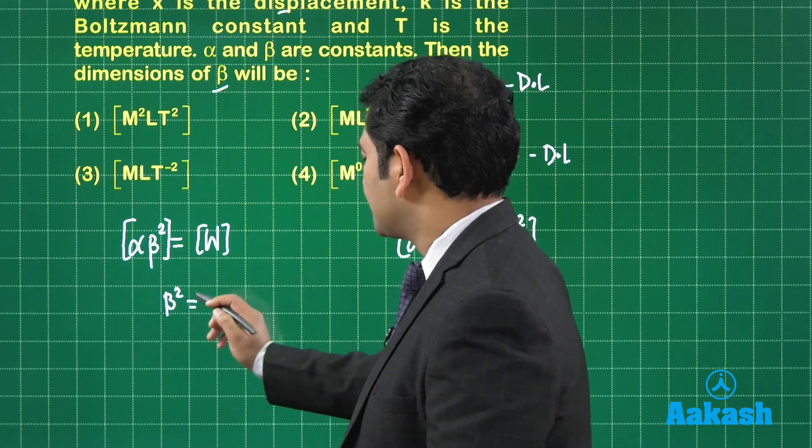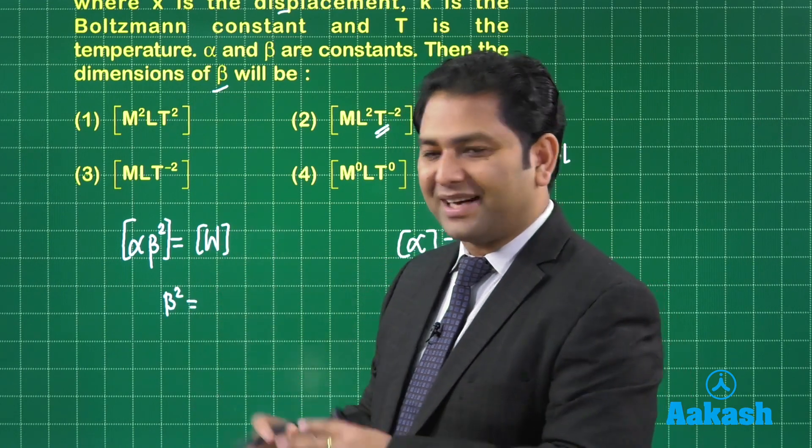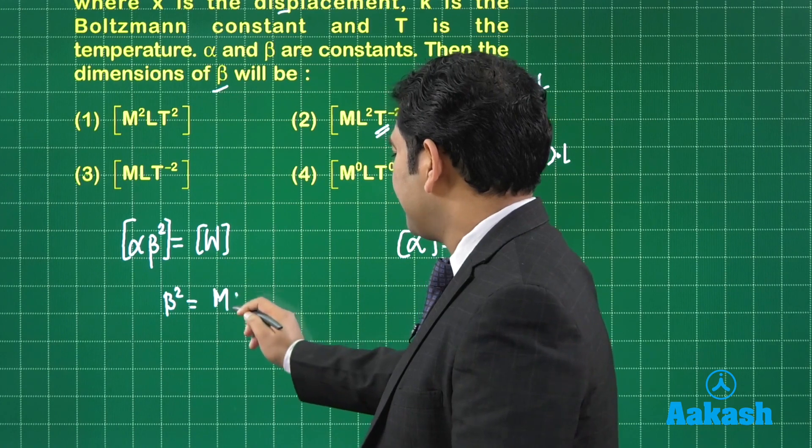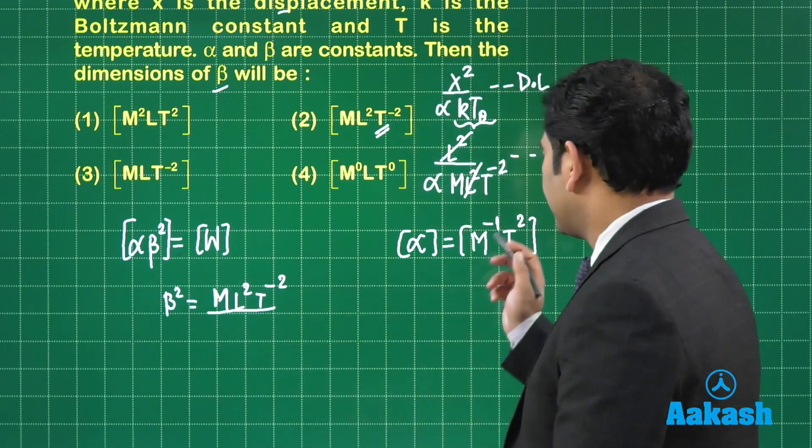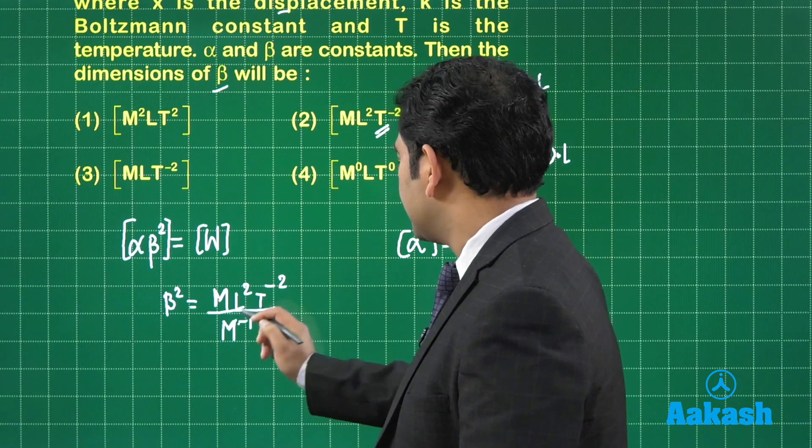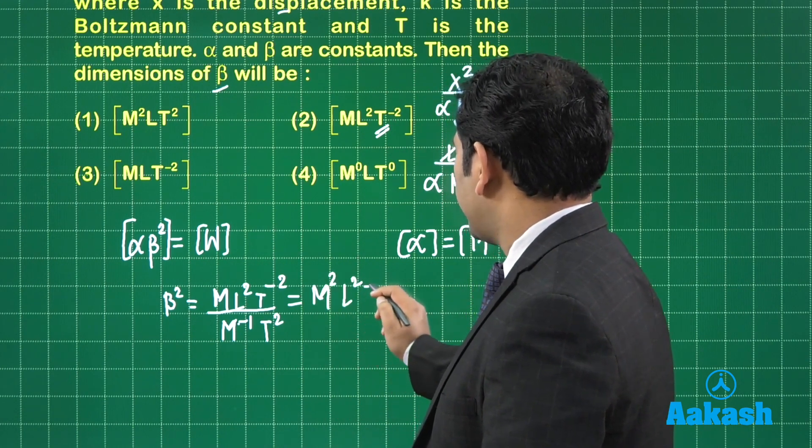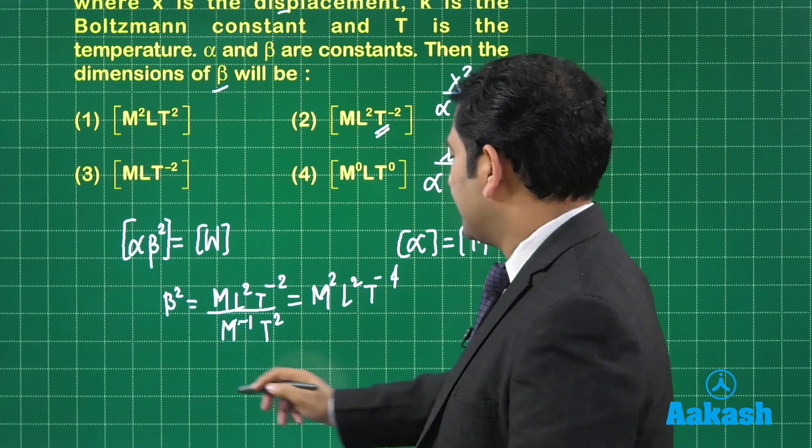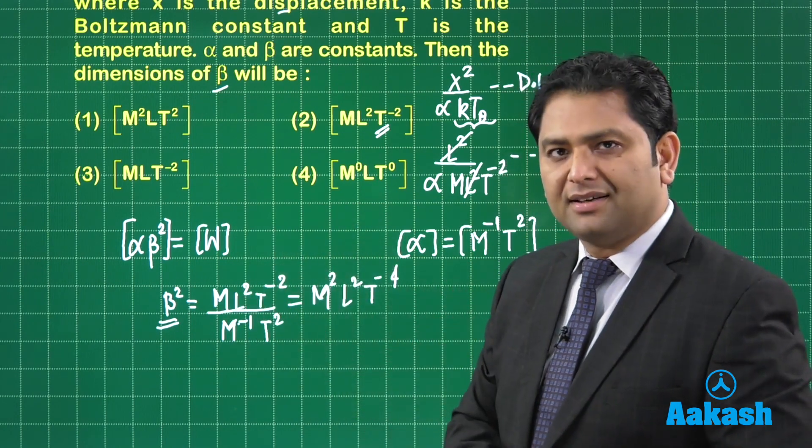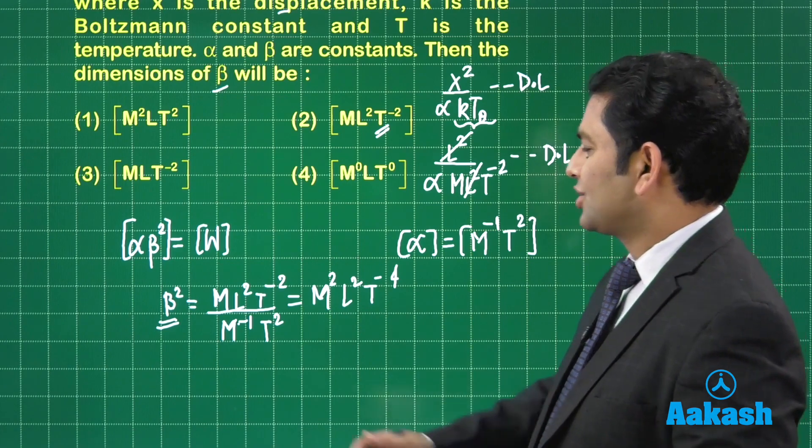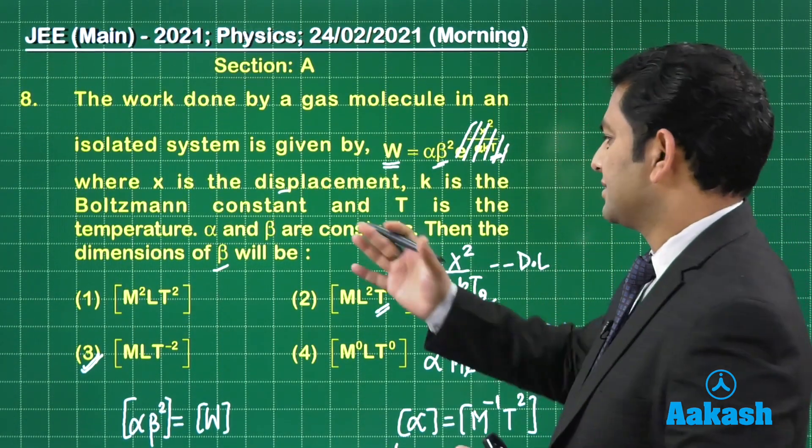Beta squared, excuse me, I'm not using all those bigger brackets, no formality. We're in the solution session. The dimensional formula for energy is ML squared T minus 2, downstairs alpha is M minus 1 T squared. When I solve this, I get M squared L squared T minus 4. That's the dimensional formula for beta squared. We need beta, so it's the square root: MLT minus 2, option number 3 is correct.